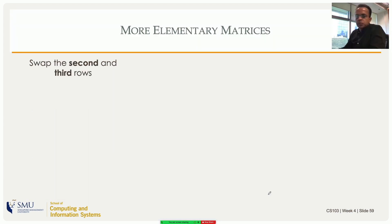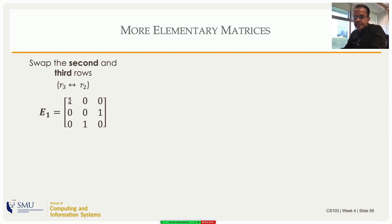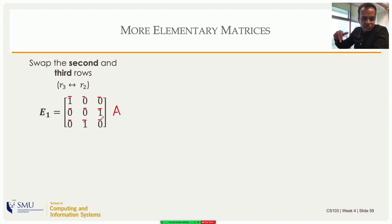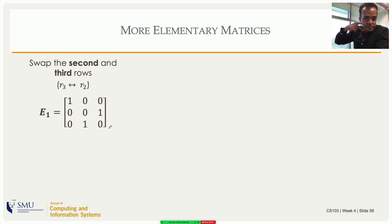Now suppose I want to swap the second and third rows of a three-by-three matrix. I write the elementary matrix accordingly. In the product, the first row uses one of the first row and zero of the others, so the first row of A is preserved. For the second row of the product, I take zero of the first, zero of the second, and one of the third — so the second row of the product is the third row of A. For the third row, I take zero of the first, one of the second, and zero of the third — so I get the second row of A. This effectively swaps rows two and three.